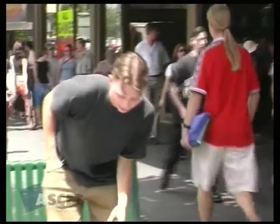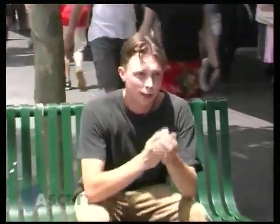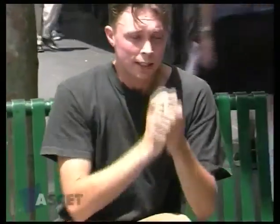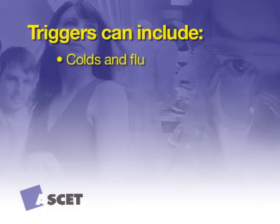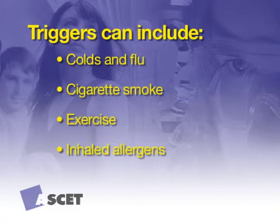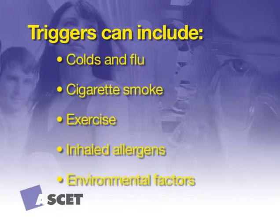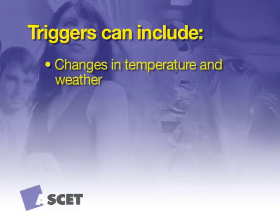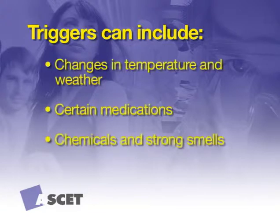Asthma. In asthma, symptoms are made worse by triggers. Every person's asthma is different and not all people will have the same triggers. Triggers can include colds and flu, cigarette smoke, exercise, inhaled allergens such as pollens, moulds, animal dander and dust mites, environmental factors such as dust, pollution, wood smoke and bushfires, changes in temperature and weather, certain medications such as aspirin, and chemicals and strong smells.